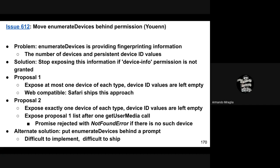Discussion: enumerateDevices is called about an order of magnitude more frequently than getUserMedia. There is a valid use case before permissions — for example, Hangouts shows a camera icon or phone icon in the top corner based on device availability. This works with Proposal 1 but not Proposal 2. However, in the typical Hangout case, camera permissions are requested early anyway. There are UI design questions about whether to show functionality before knowing if devices exist.